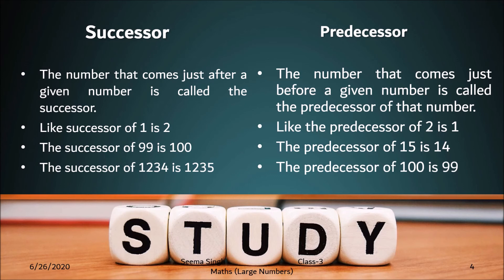The predecessor is the number that comes just before a given number — that is, when we subtract 1 from a given number, the answer we get is its predecessor. For example, the predecessor of 2 is 1, the predecessor of 15 is 14, and the predecessor of 100 is 99. So to summarize: successor means adding 1, and predecessor means subtracting 1 from a given number.